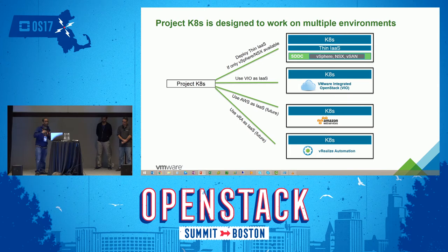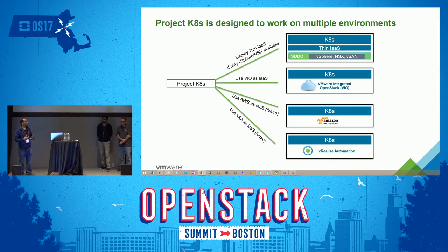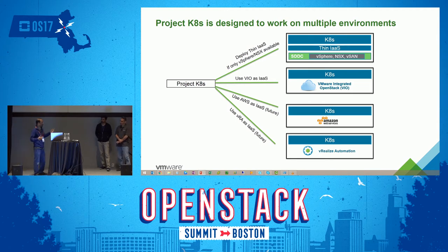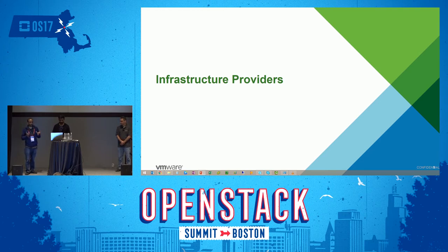You can have either a full-fledged OpenStack — if you're an existing OpenStack customer or your use cases require both VMs and containers — or you can use the thin appliance model. In future, we also plan to support other cloud providers such as AWS and Google. The product is architected to cleanly abstract both the infrastructure layer and Kubernetes lifecycle management, allowing additional cloud providers to be added over time.